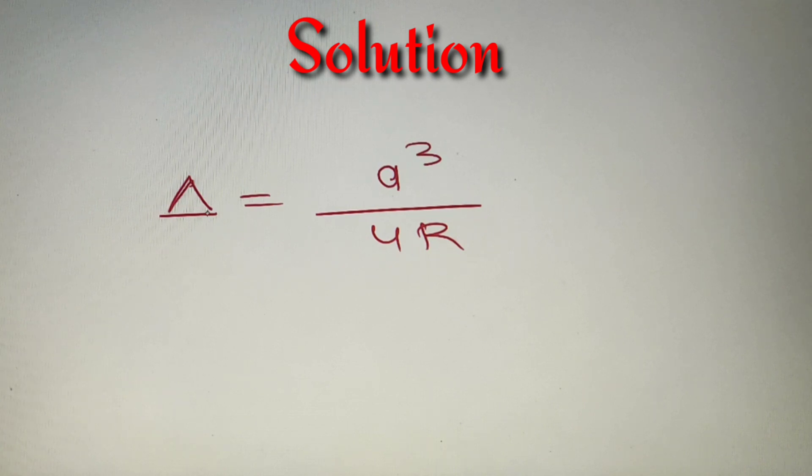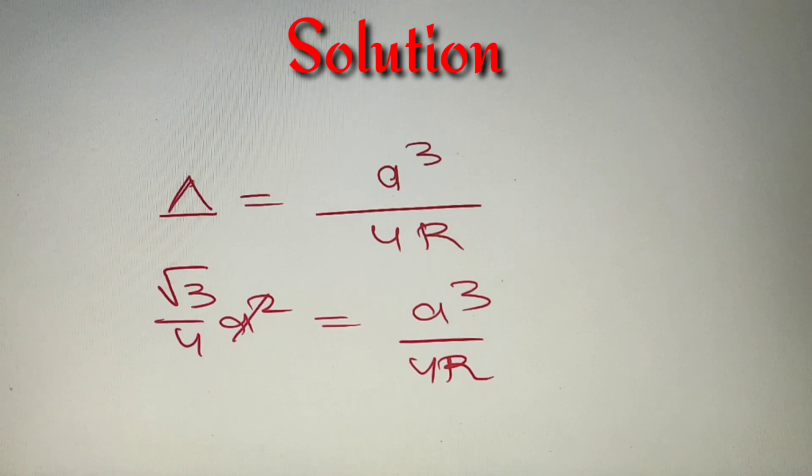Now we know that the area of an equilateral triangle is √3/4 a² where a is the side and we'll get a³/4R in the RHS. Now over here a² and a² will get cancelled and we'll be left with a in the RHS.